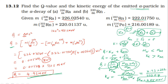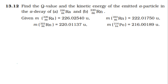For the second one: Q value equals mass defect into c-squared. Mass defect equals mass of parent nucleus Rn-86-222 minus mass of product particles: Po-84-218 plus the alpha particle He-4.